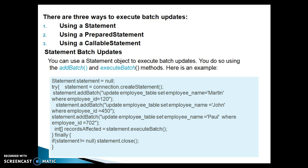The executeBatch() method returns an array of integers. In the finally block you close the connection, though if you use try-with-resources you don't need to explicitly close it. To summarize: first, SQL statements are added to the batch using addBatch(); then they are executed using executeBatch(). The integer array returned tells how many records were affected by each executed SQL statement. For a successful execution it returns one; for a failure it returns zero.